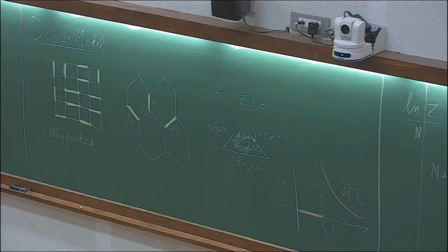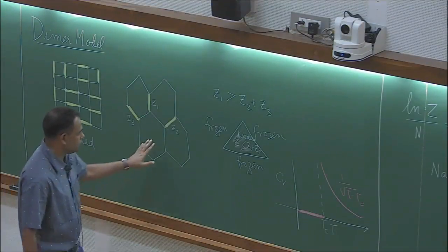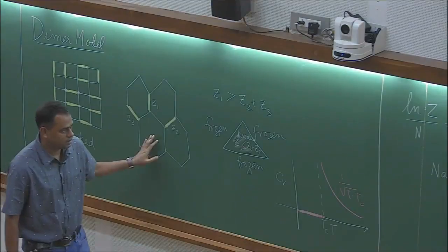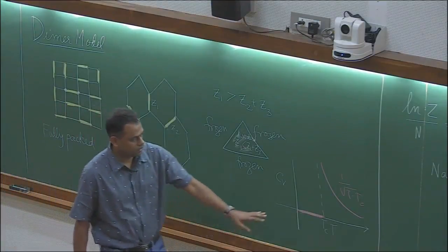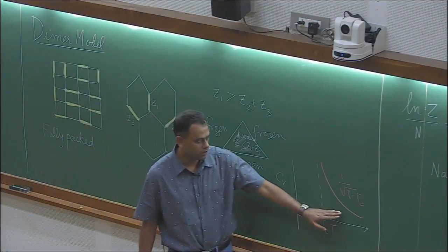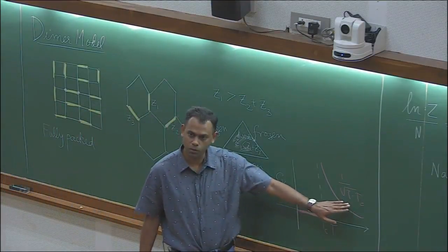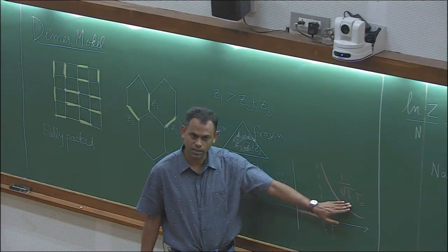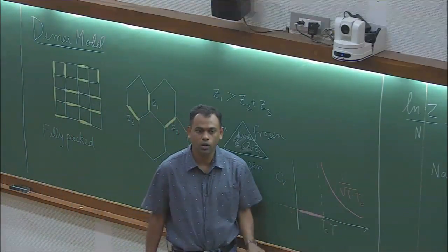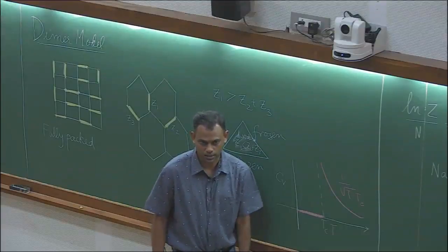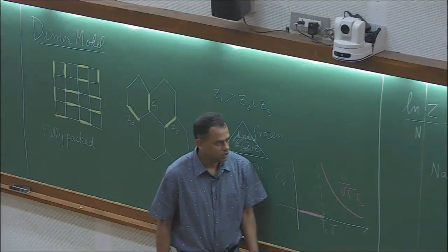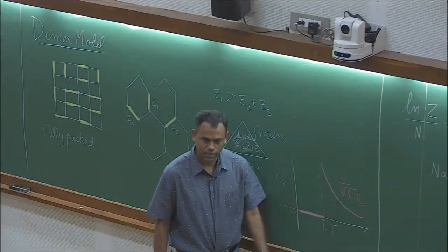There are a few features of dimer models to note. One is that if they show a transition, there are two kinds of singular behavior: either 1/√(T−Tc) or the Ising answer.